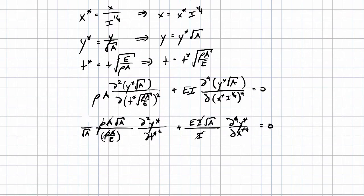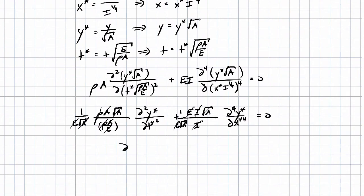Then we can simplify: A divides out with A, rho divides out, I divides out. Then I'll divide through by E times the square root of A in both terms to get rid of that square root of A and that E. The first term becomes dimensionless, and that works on the second term as well. What we're left with is a nicely simplified, cleaner-looking dimensionless governing equation.